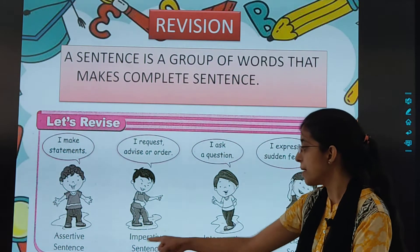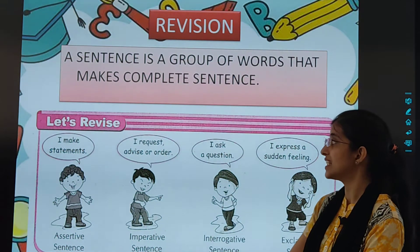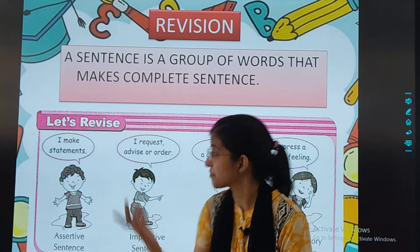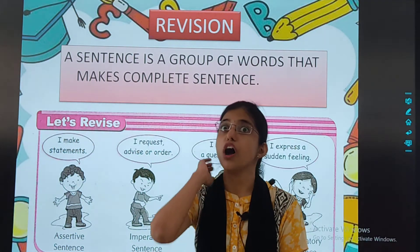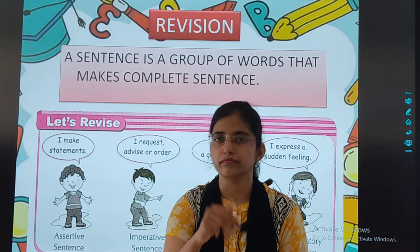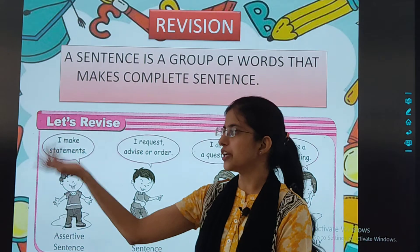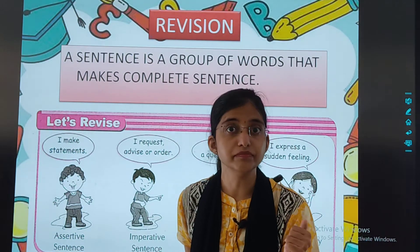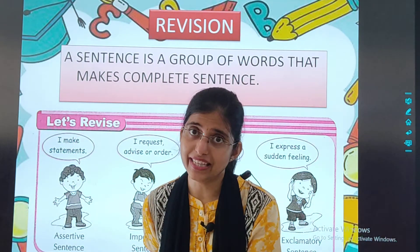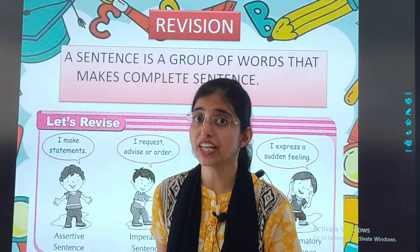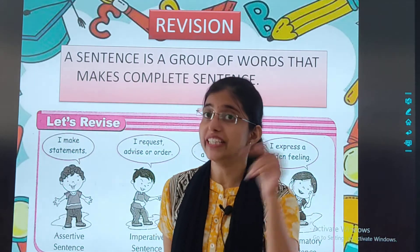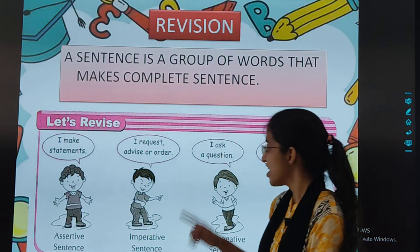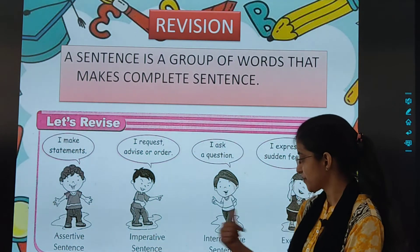Second is the imperative sentence. It gives a request, advice, or order. For example, 'Open the door' is an order. 'Please give me a pen' is a request. These types of sentences are imperative sentences.